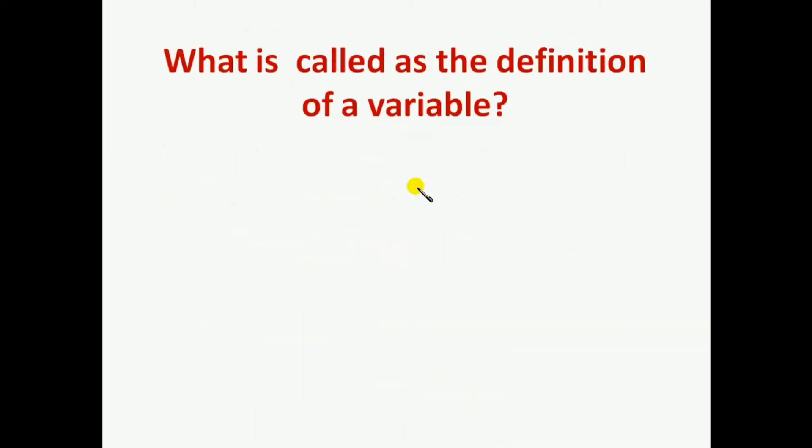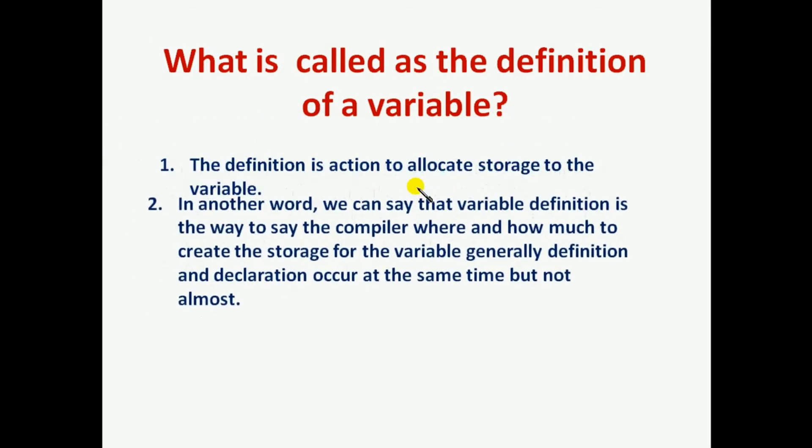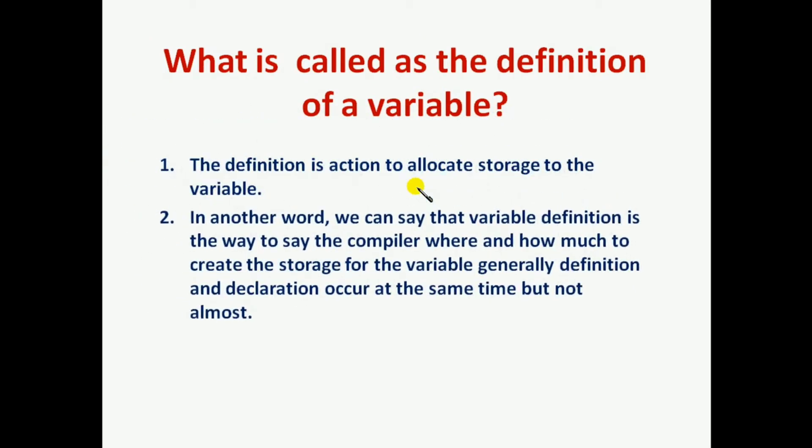The second question is: What is called the definition of a variable? The definition is the action to allocate storage to the variable. In other words, we can say that variable definition is the way to tell the compiler where and how much storage to create for the variable.